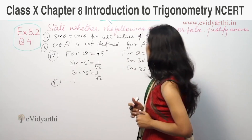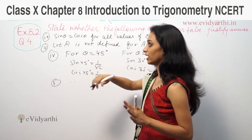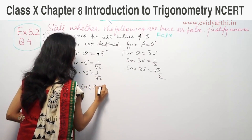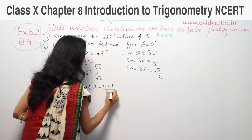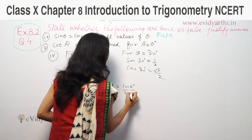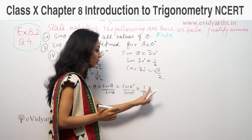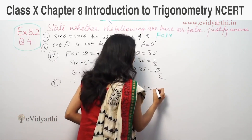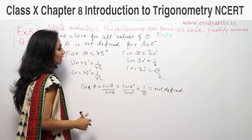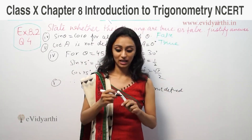Fifth part: cotA is not defined for A = 0°. We know that cotA equals cosA divided by sinA. If A = 0°, then cot 0° = cos 0°/sin 0° = 1/0. If 0 comes in the denominator, the value is not defined — it is infinite. That means this statement is true: when θ = 0, cotθ is not defined.